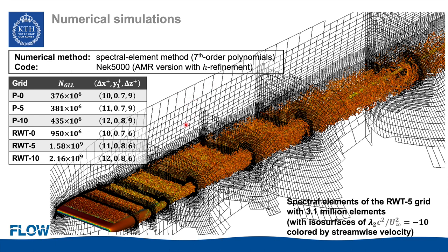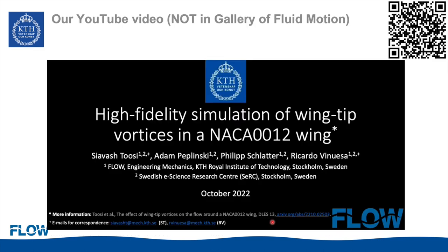The table summarizes the number of grid points and resolution for each grid. The number of grid points ranges from 370 million to 2.2 billion depending on the geometry. Resolutions are in the range of 10 to 12 in Δx⁺ (streamwise), 0.2 to 0.8 in wall-normal direction, and 6 to 9 in the spanwise direction.